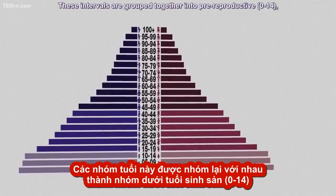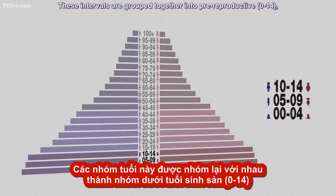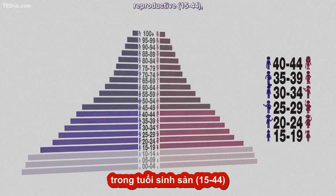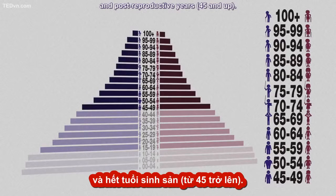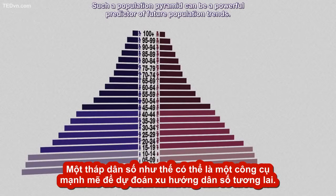These intervals are grouped together into pre-reproductive years (0 to 14), reproductive years (15 to 44), and post-reproductive years (45 and up). Such a population pyramid can be a powerful predictor of future population trends.